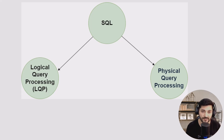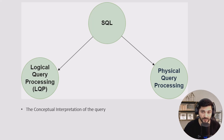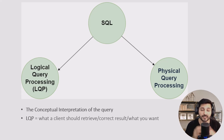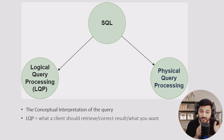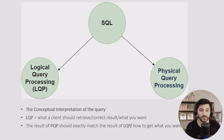In SQL we have two types of query execution: logical query execution and physical query execution. Logical query processing — in short, LQP — is also called the conceptual interpretation of the query. It defines what a client should retrieve; it answers the question 'what.' For physical query execution, we use imperative language and it answers the question 'how' — how do you want to get the data that you want. Logical query processing uses declarative language and answers 'what you want.'